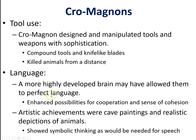Cro-Magnons used much more sophisticated tools than earlier species — compound tools, knife-like blades — which could also function as weapons to kill animals from a distance, necessary for hunting mammoths. Their highly developed brain allowed them to perfect language, enabling better communication and collaborative problem-solving. There is also evidence of cave paintings depicting animals, showing a much more complex way of thinking.